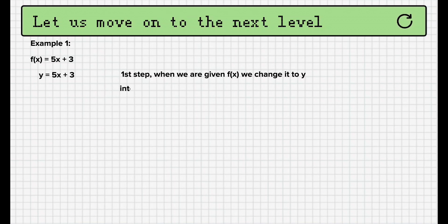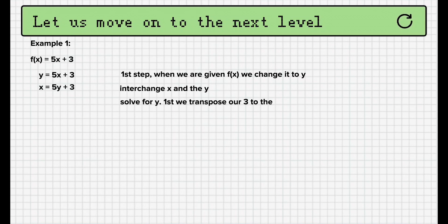The next step is to interchange x and y. We have x = 5y + 3. Now, we solve for y. First, we transpose our 3 to the left side, which makes it -3. Now, it's x - 3 = 5y.